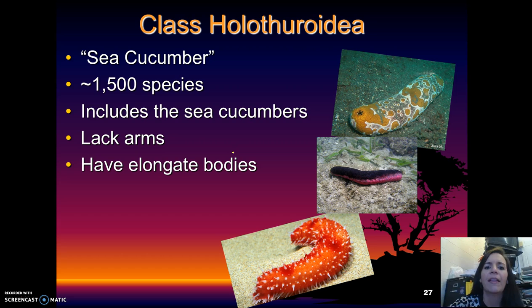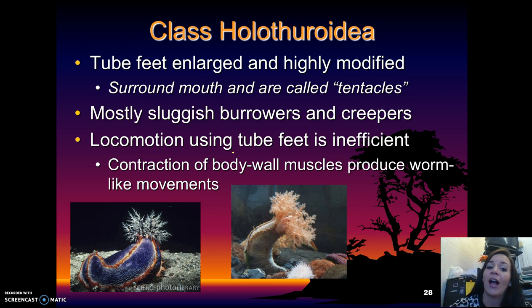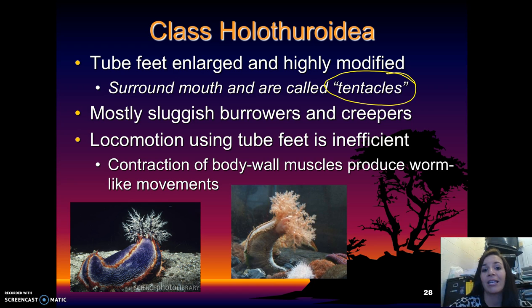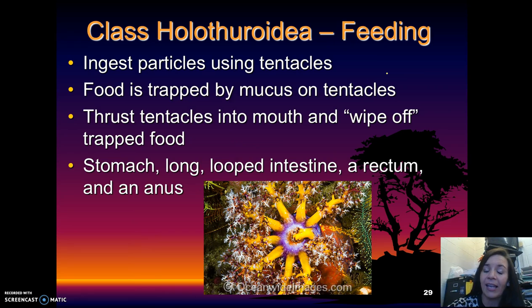The next class is Holothuroidea — these are the sea cucumbers, and there are roughly 1,500 species. They lack arms and have long, elongate bodies. They have highly modified tube feet that surround the mouth and are referred to roughly as tentacles. They are mostly sluggish — they burrow and creep. Their locomotion using tube feet is also inefficient, so they contract their body wall muscles to produce a worm-like movement.